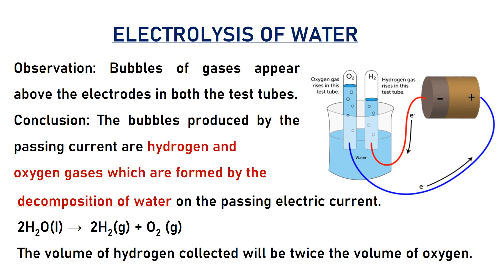Activity: electrolysis of water. Observation: bubbles of gases appear above both electrodes in both test tubes. Conclusion: the bubbles produced by passing electric current are hydrogen and oxygen gases, formed by the decomposition of water. When electric current is passed, water decomposes into hydrogen and oxygen. The volume of hydrogen collected is twice the volume of oxygen.